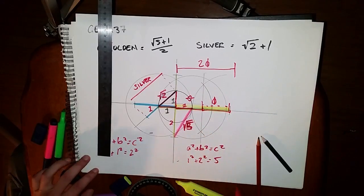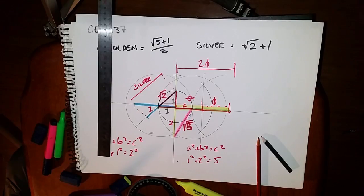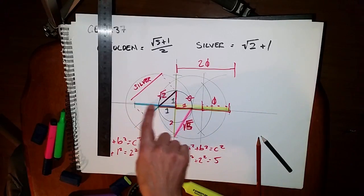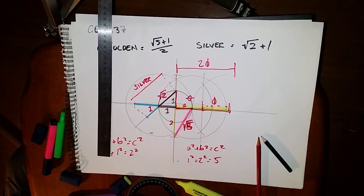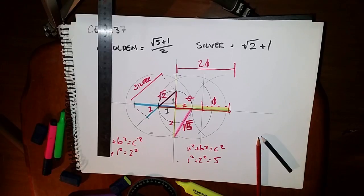So silver ratio, golden ratio from the vesica. Have a good one. And check out Geek 37, I'll put links in the description.